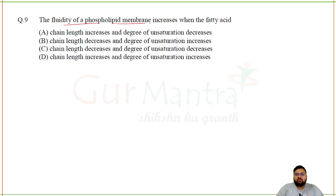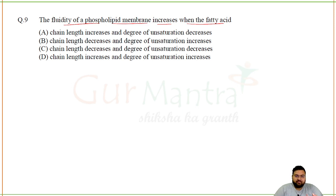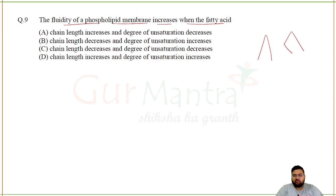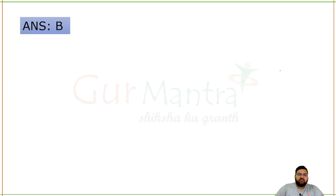The fluidity of a phospholipid membrane increases when fatty acid chains have reduced interaction with each other. This happens in two ways: by shortening chain length, and by increasing the degree of unsaturation. Unsaturation introduces kinking — unsaturated chains bend, preventing tight packing. So to increase membrane fluidity, decrease chain length and increase the degree of unsaturation.